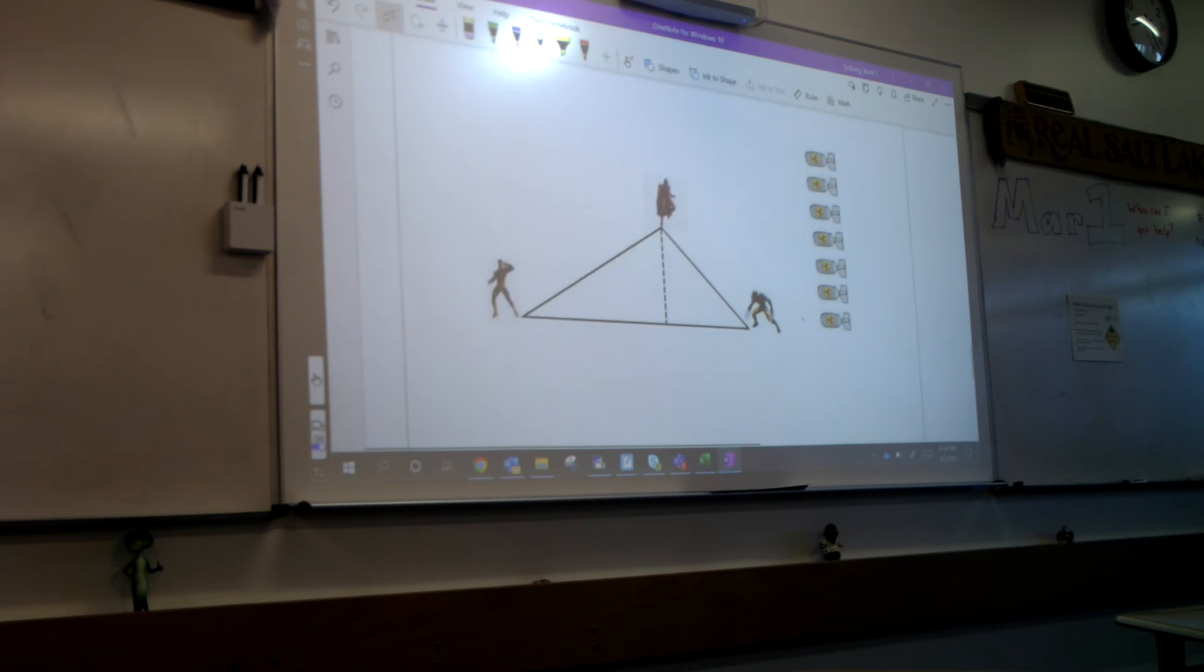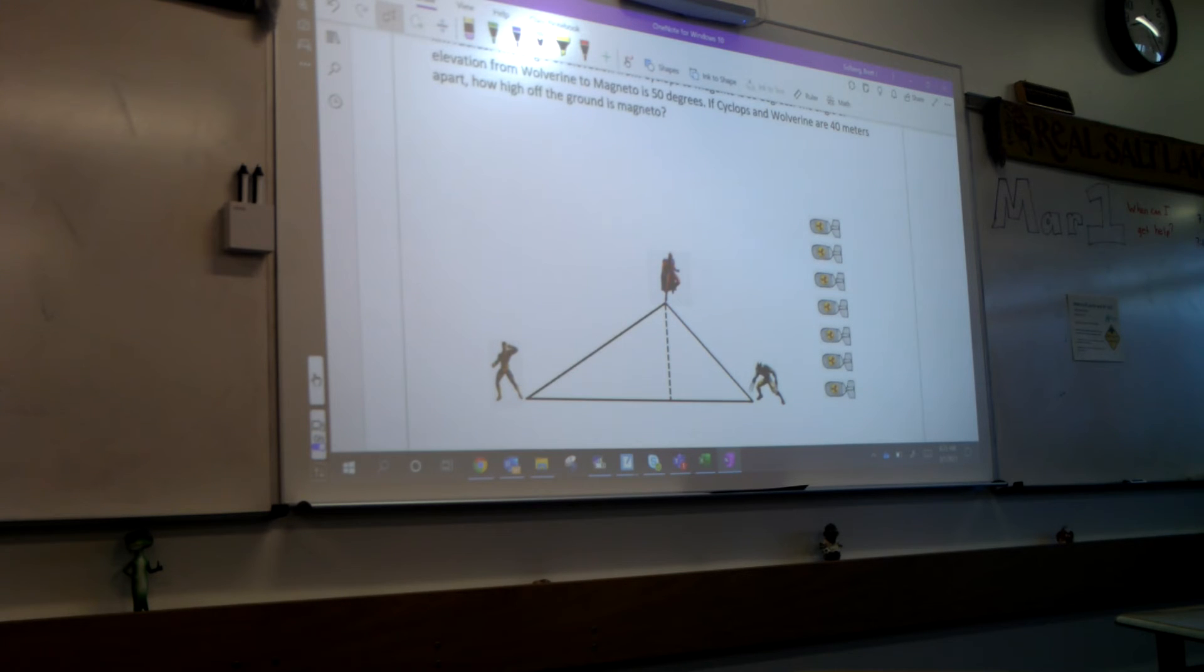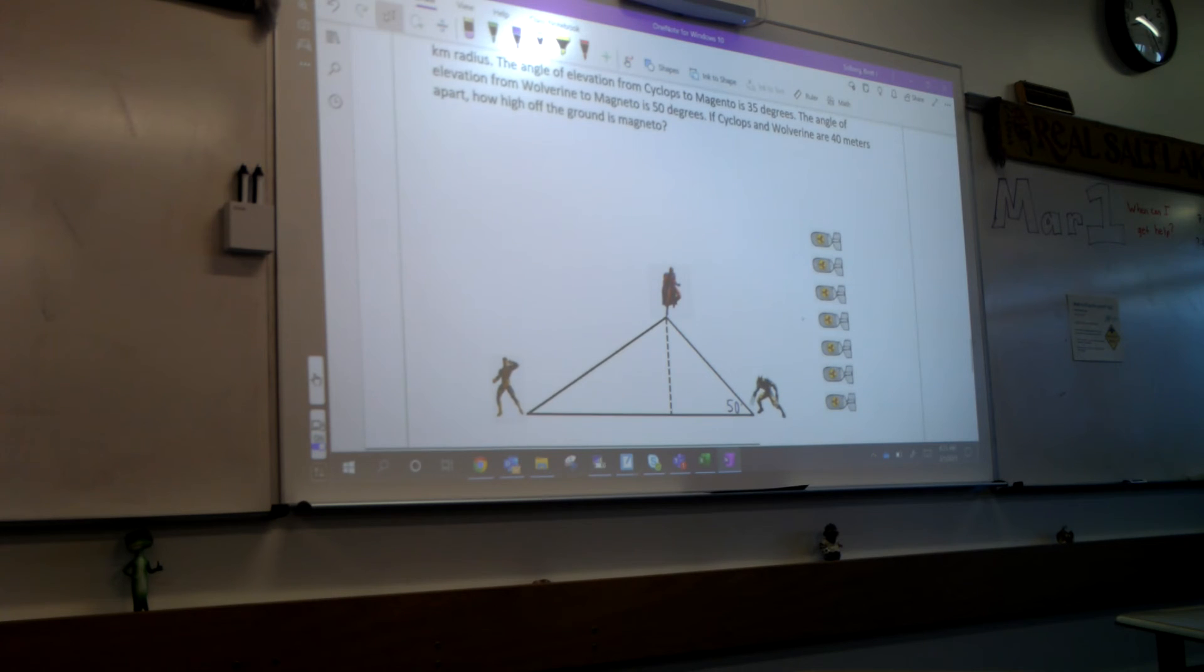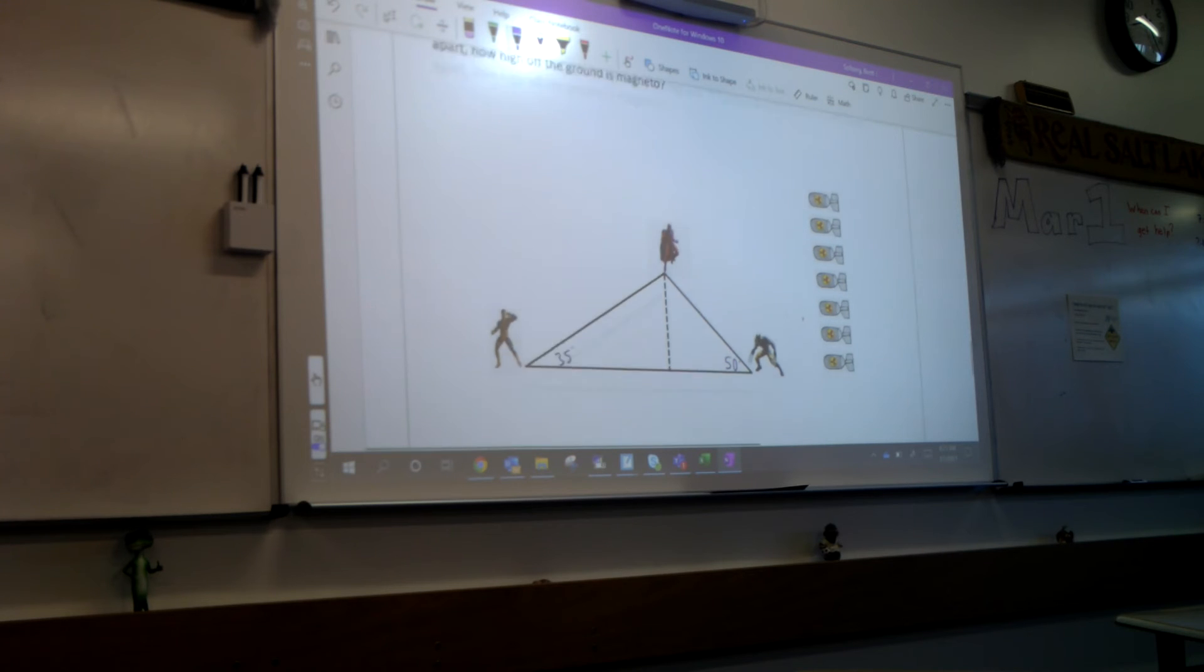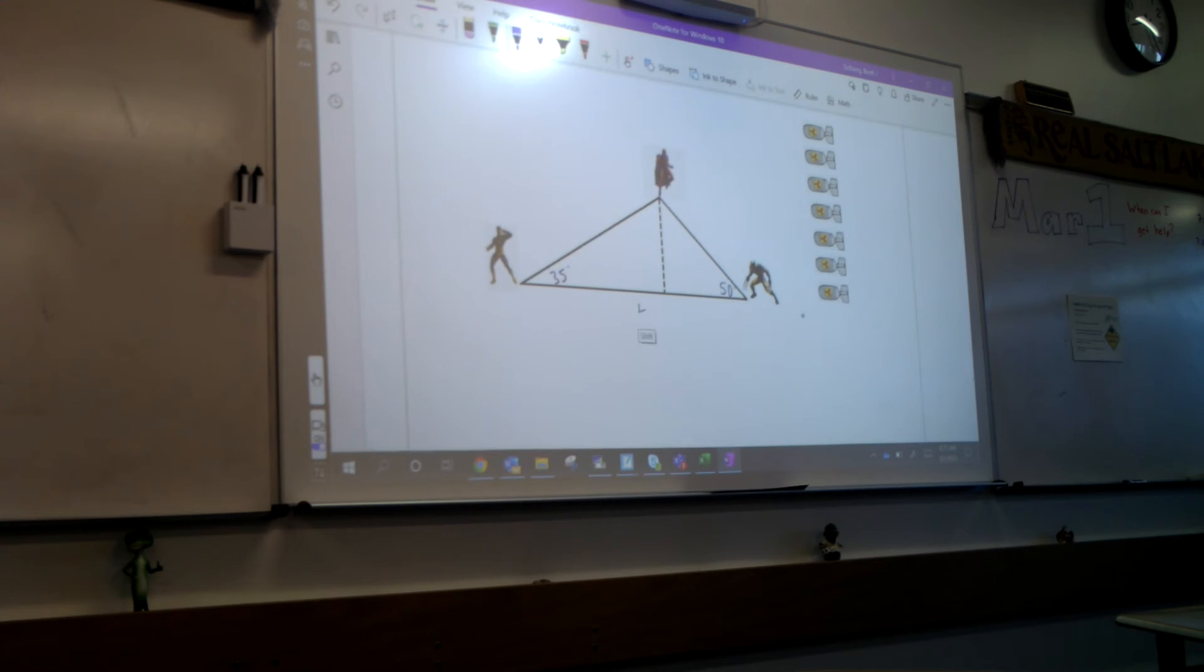Now, I actually drew this one out for you because I didn't think it would be fair for me to try to draw a Wolverine and have it look totally stupid. So, here's Wolverine and Cyclops. What do we know? What's given in this problem? Okay, so I know Wolverine to Magneto is 50 degrees. And then we've got Cyclops to Magneto is 35 degrees. And then I'm told that Wolverine and Cyclops are 40 meters apart. Does that sound good? Now, what is the problem trying to find here? The height of Magneto.